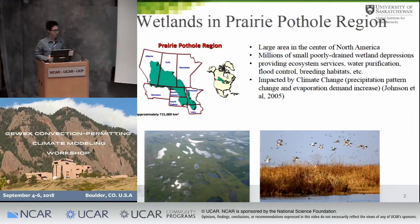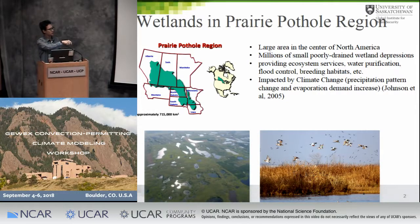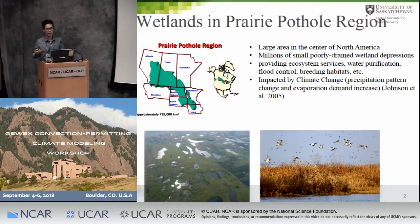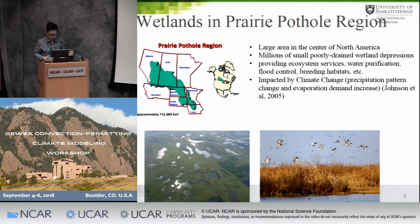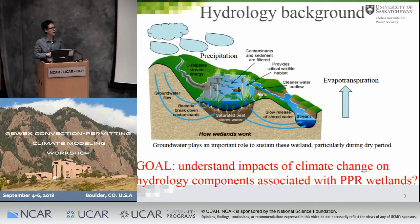First of all, let's look at where prairie potholes are. Prairie potholes are a large area in the center of North America that contains millions of wetlands — you can see this if you look down from a plane. These wetlands provide very important ecosystem services including flood control, water purification, and very importantly, habitat for migrating waterfowls in this region.